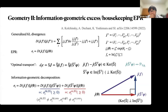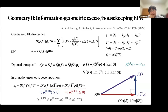Numerically, we can see that there is some inequality between them: the information geometric excess entropy production rate is always less than or equal to the Onsager-projected excess entropy production rate. However, this is only numerical evidence and we cannot yet prove it.